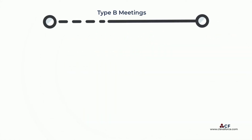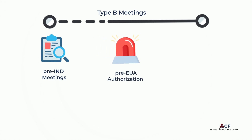Type B meetings include, but are not limited to, pre-investigational new drug application meetings, pre-emergency use authorization meetings, and pre-new drug application or pre-biologics license application meetings.